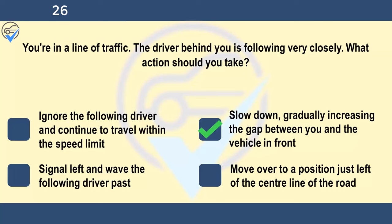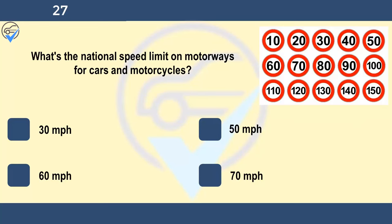What's the national speed limit on motorways for cars and motorcycles? 30 mph, 50 mph, 60 mph, or 70 mph.